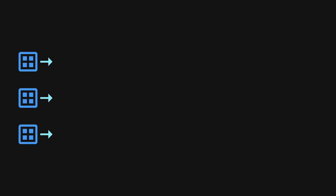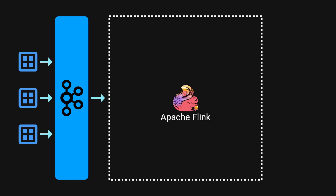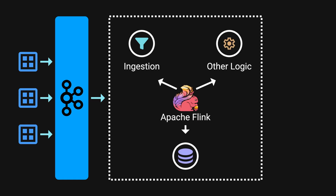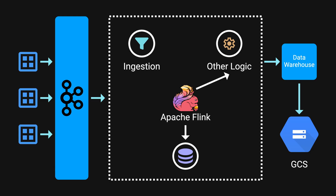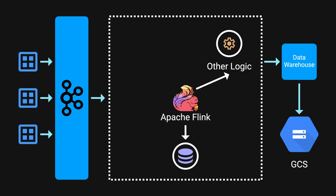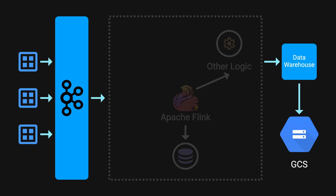They aimed to streamline their workflow by outsourcing certain tasks from the Apache Flink pipeline to an external SQL-based data warehouse. In this setup, Flink would simply submit queries to the data warehouse, which in turn would write the results directly to Google Cloud Storage. This essentially means that data ingestion can be entirely removed from the pipeline, allowing the external data warehouse to manage it.